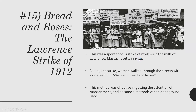Bread and Roses — the Lawrence Strike of 1912. There was a spontaneous strike in the mills of Lawrence, Massachusetts. During the strike, women walked through the streets with signs saying 'We want bread and roses' — that's the nickname of this event. This method was effective in getting attention from management. You name a facet of the American economy and workers were banding together in solidarity to demand better working conditions, safety, eight-hour workdays — the whole nine.